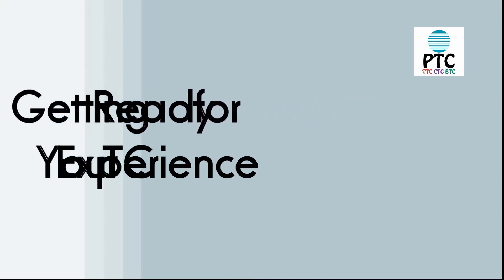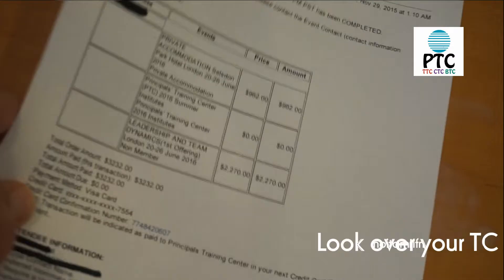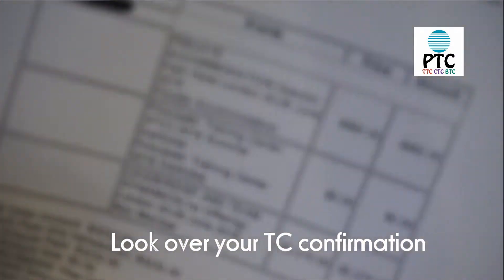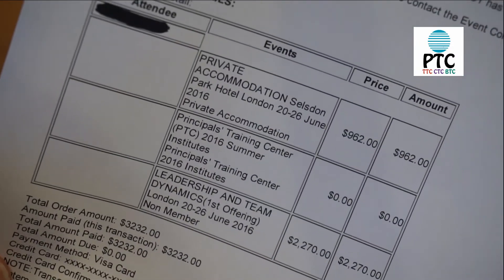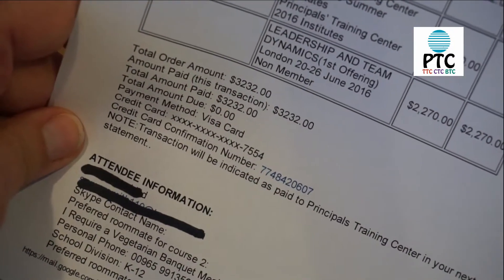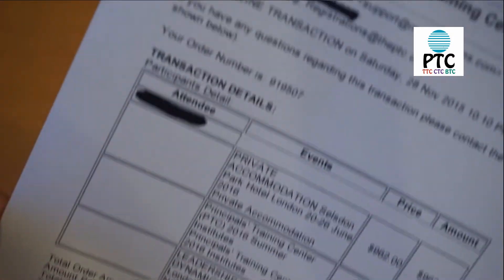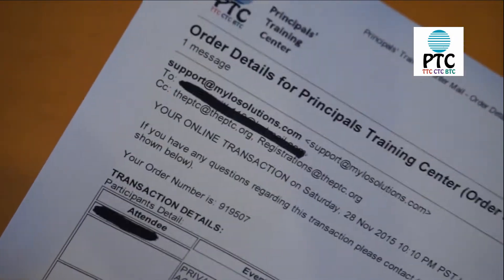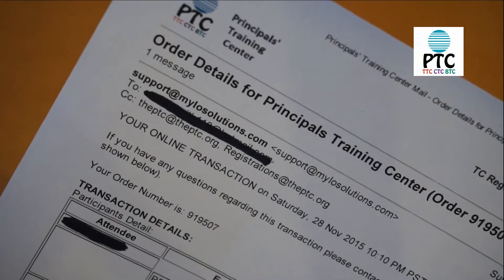Several weeks before you leave for your course, there are some things you should do to get ready. First, check your registration. If you've successfully registered and paid for a TC course, you will have received an email confirmation with details of your course accommodation and payment. Double-check courses, dates, times, and locations, and that everything is correct.